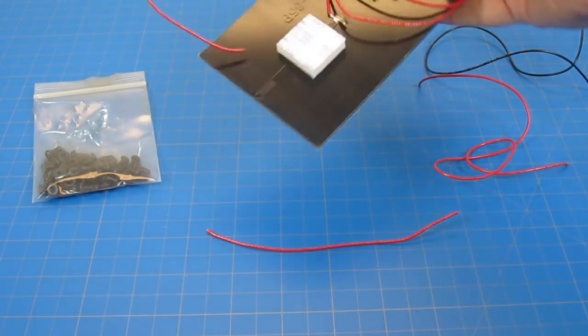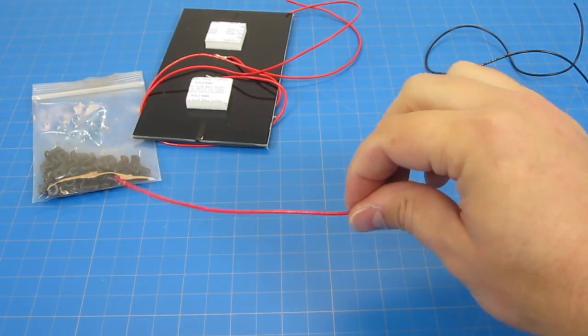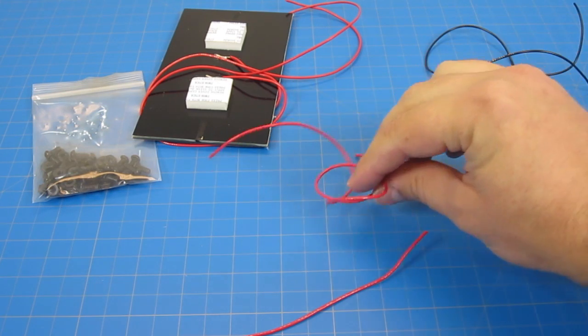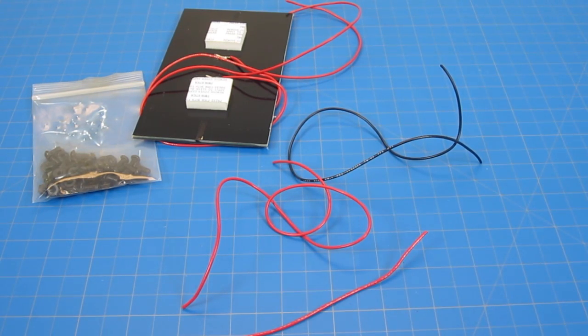We have our solar cell with attached wires and quarter inch foam tape, a small solid core piece of wire, as well as two long stranded core wires, one black and one red.